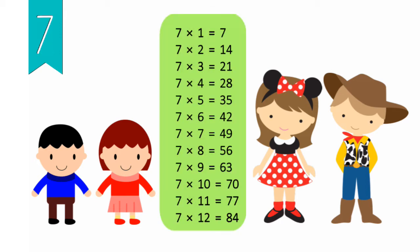7 x 1 equals 7, 7 x 2 equals 14, 7 x 3 equals 21, 7 x 4 equals 28, 7 x 5 equals 35, 7 x 6 equals 42, 7 x 7 equals 49, 7 x 8 equals 56, 7 x 9 equals 63, 7 x 10 equals 70, 7 x 11 equals 77, 7 x 12 equals 84.